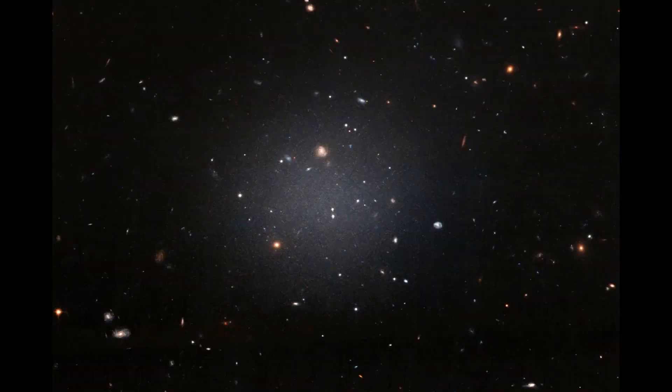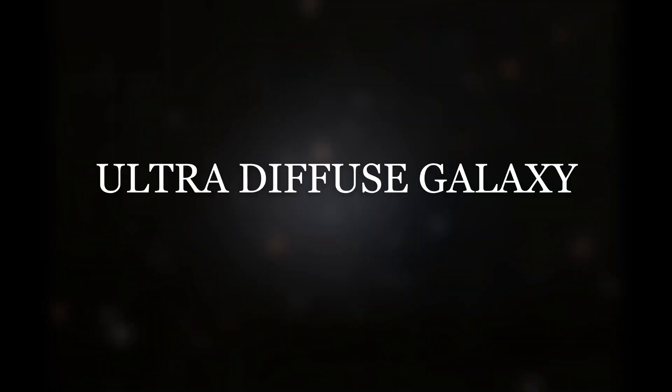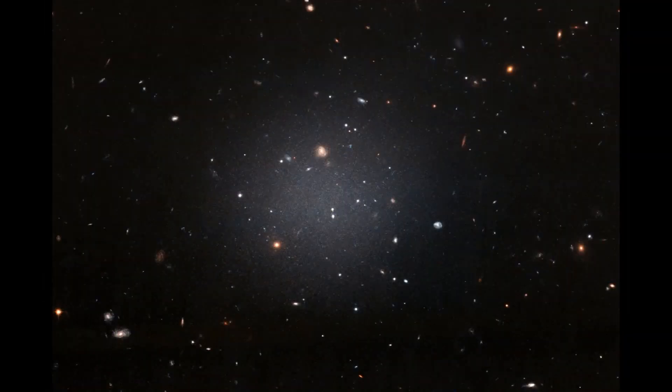But galaxies like DF2 are devoid of dark matter. These galaxies are known as ultra-diffuse galaxies. The formation process of ultra-diffuse galaxies is still unknown.